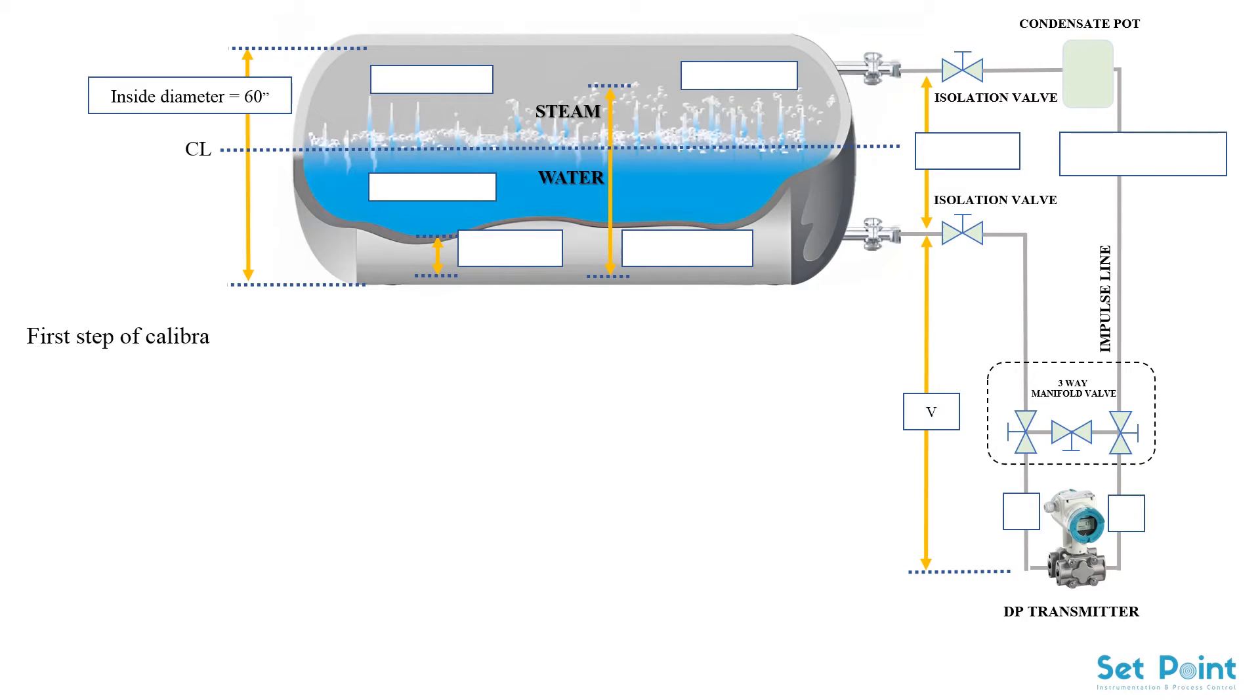First step of calibration is to define the process variables. So in this example we assume that the static pressure in the boiler drum and at the top tap is 2425 pounds per square gauge.